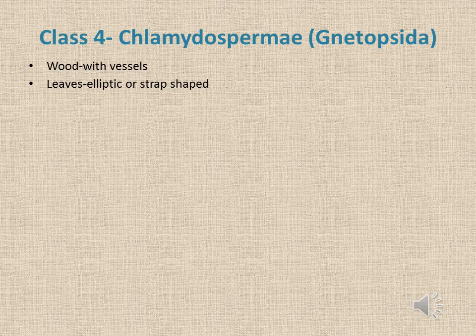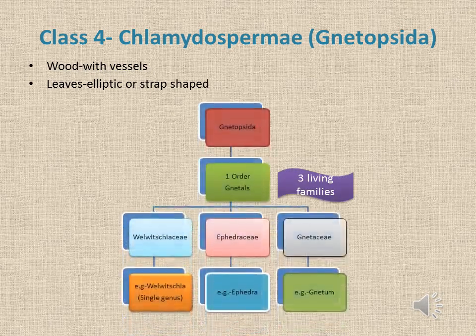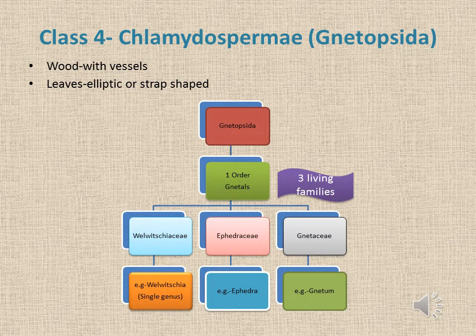Chlamydospermae or Gnetopsida: the wood has vessels and the leaves are strap-shaped or elliptical. The ovule is surrounded by a characteristic envelope. Gnetopsida has one order, Gnetales, and 3 living families: Welwitschiaceae, Ephedraceae, and Gnetaceae. Welwitschiaceae has Welwitschia as its only single genus. Ephedraceae example is Ephedra, and Gnetaceae example is Gnetum.